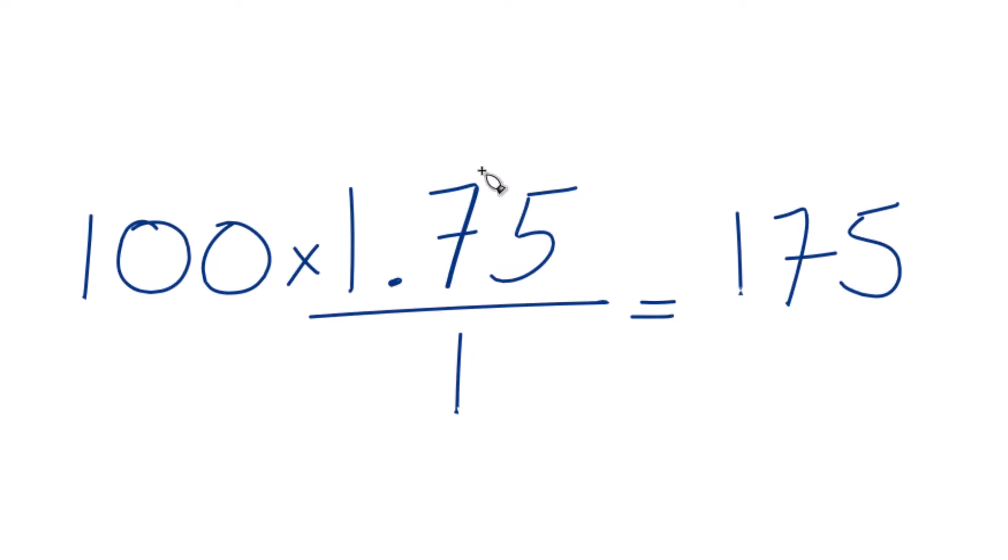But remember, we did this to the numerator, we have to do it with the denominator as well. Let's multiply that by 100, and we get 100 times 1 is 100. And there's our fraction, 175 over 100.